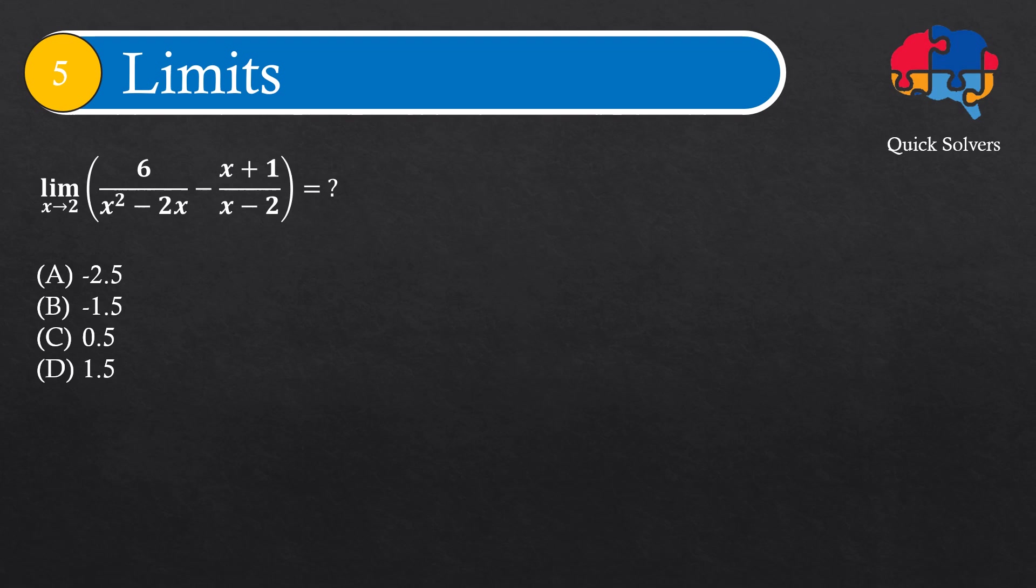For that, in the first step, I need to find the least common denominator between the denominator here and the denominator here. I can write this denominator as x times x minus 2, and this one is x minus 2. So since this denominator appears in the other denominator, I can take the whole denominator here as the least common denominator or LCD.